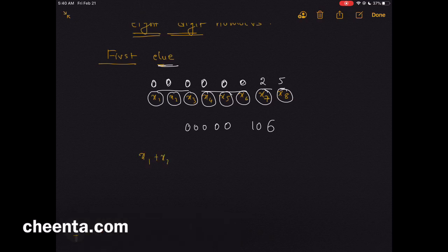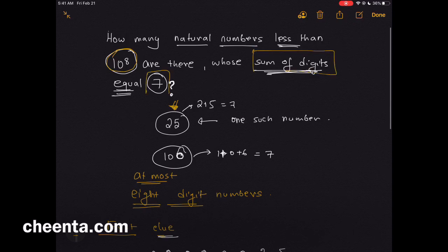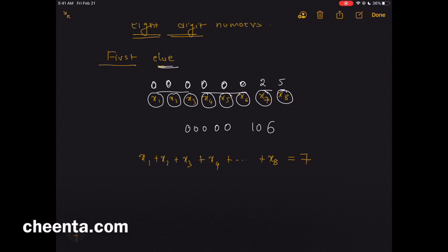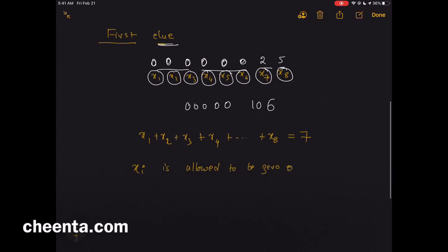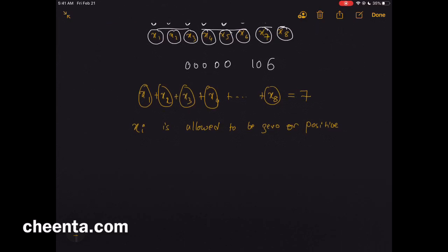We have x1 plus x2 plus x3 plus x4 up to x8 — this sum has to be equal to 7. That's the condition given: the sum of digits needs to be equal to 7. Some of the digits can be 0, so each x_i is allowed to be 0 or a positive integer. Each of these must be a non-negative integer and their sum needs to be equal to 7.